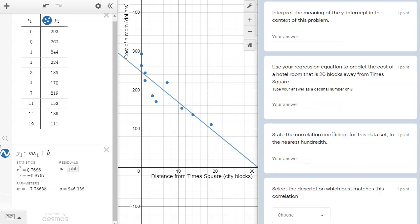The next question asks us to interpret the meaning of the y-intercept in the context of this problem. The y-intercept is the point where the equation makes contact with the y-axis, and x equals zero at this time. Again, our axis labels come in handy here. When x equals zero, we are at Times Square.